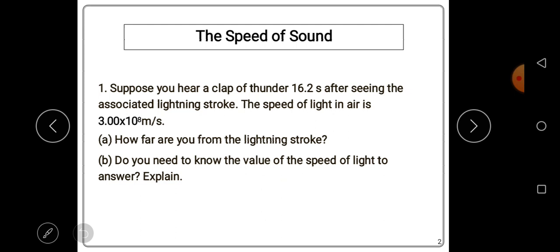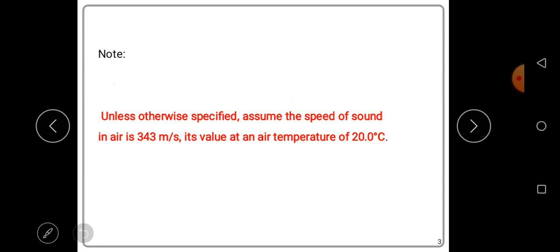So let's continue. We should take note of that: unless otherwise specified, assume the speed of sound in air as 343 meters per second. Its value at an air temperature of 20.0 degrees Celsius. So this is what we should take note of.